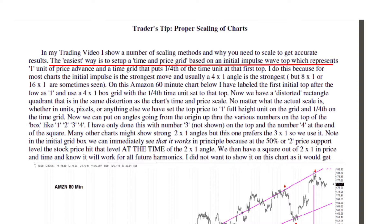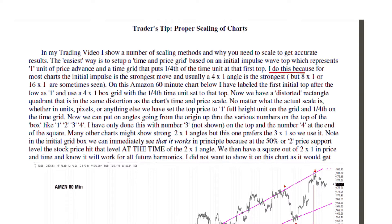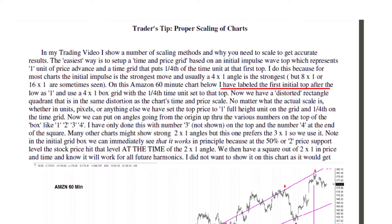The easiest way is to set up a time and price grid based on an initial impulse wave top, which represents one unit of price advance, and a time grid that puts one fourth of the time unit at that first top. He writes: 'I do this because for most charts the initial impulse is the strongest move and usually a four by one angle is the strongest.' Label the first initial top after the low as one, and use a four by one box grid with the one-fourth time unit set to that top.